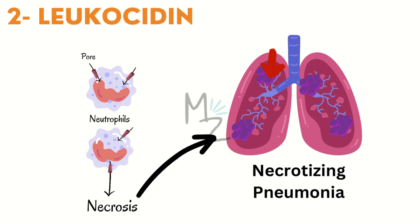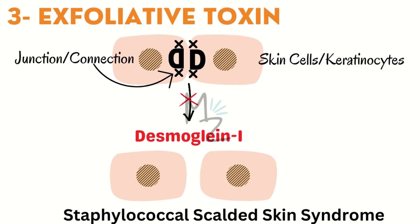Leukocidin is most common in the lungs. Bacteria in the lung undergo this process, causing necrosis of lung tissue cells and damage to parenchymal lung tissue. This leads to necrotizing pneumonia.